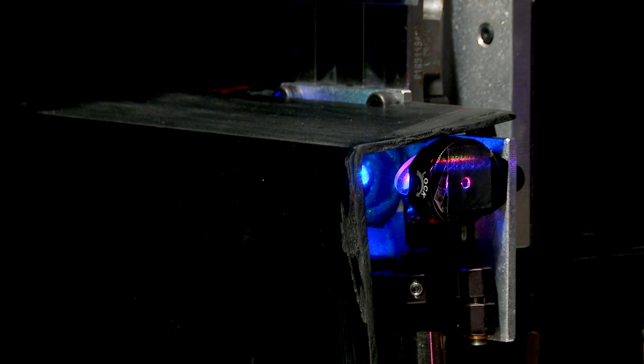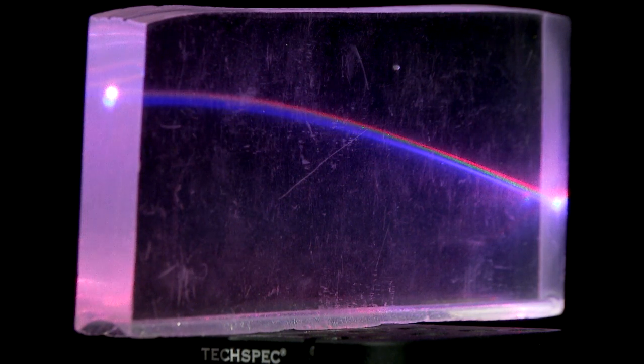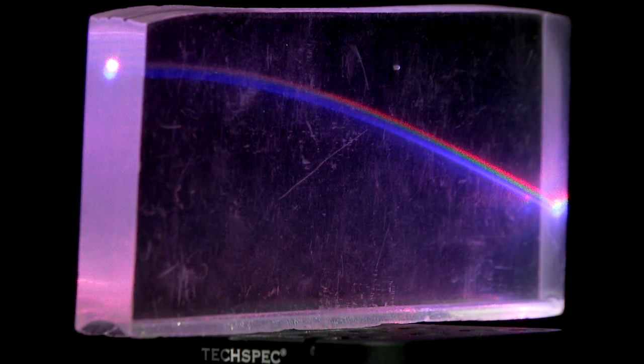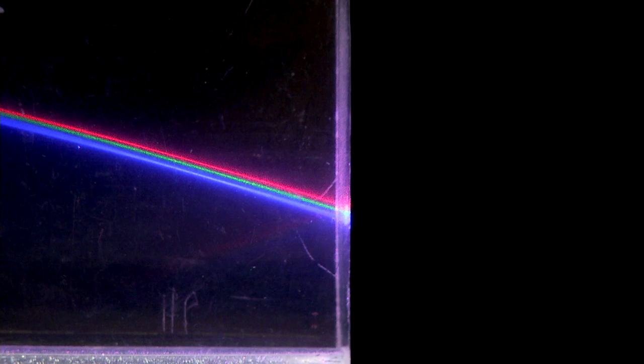Then, as I scan this laser beam up through the block into the gradient index region, you'll see the beam curve down towards the higher index of refraction, but you'll also see that the colors separate, because all three colors are not going to bend equally in the gradient index material.